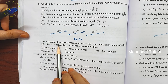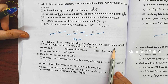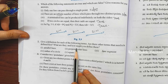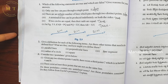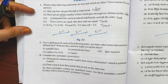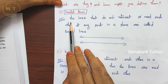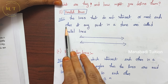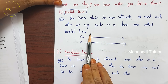Question number two: give a definition for each of the following terms. Are there other terms that need to be defined first? Parallel lines definition: lines that do not intersect or meet each other at any point in the plane are called parallel lines.